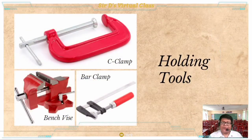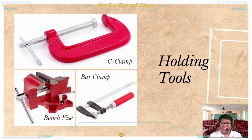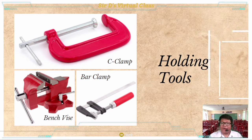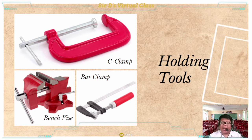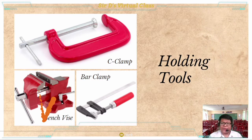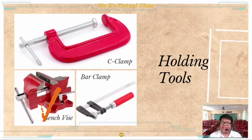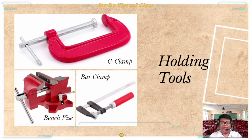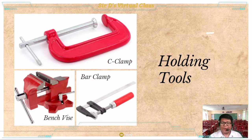The holding tools group includes the C-clamp, used for holding together pieces of lumber while working; the bench vise, used to hold any material or tool in place; and the bar clamp, used to hold large boards or wooden frames together while assembling parts.